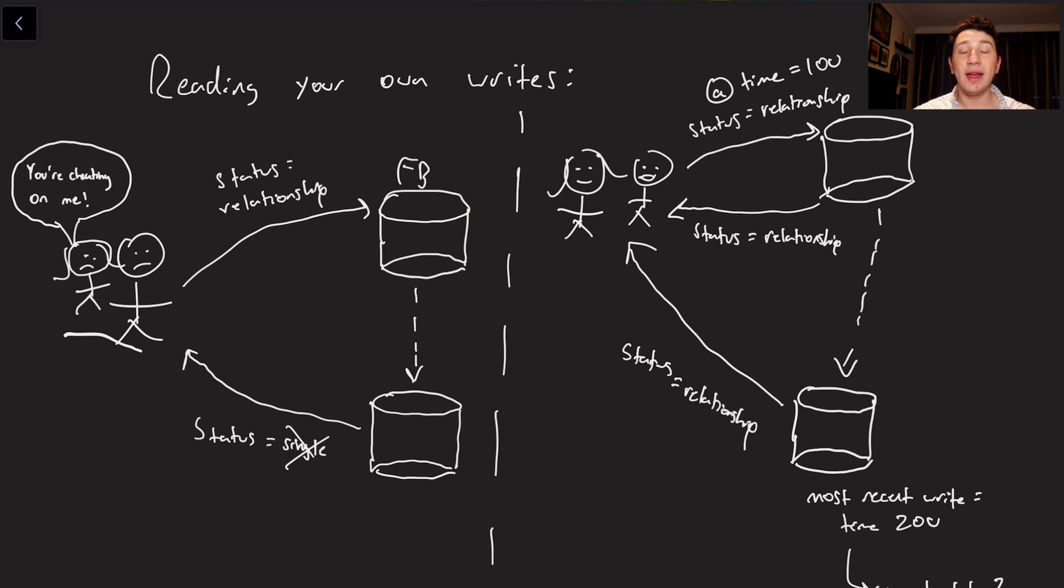But one clever way of dealing with this where we can still have eventual consistency is we can say, well for starters, if I'm going to make a write, for let's say 10 seconds after I make this write, I'm only going to read from the database that I wrote to. So we're going to make sure that we get the proper results back. Now our girlfriend is happy and we can continue to cheat on the DL. No, I'm just kidding.